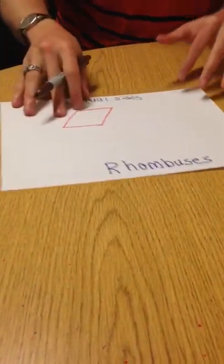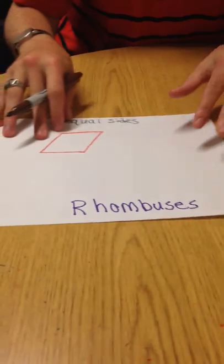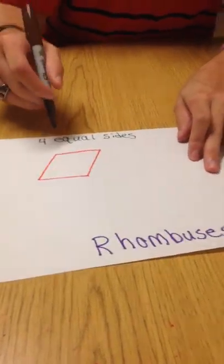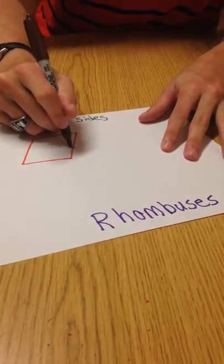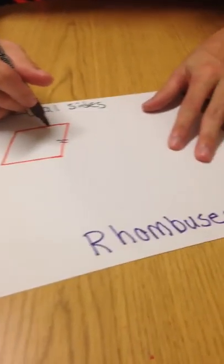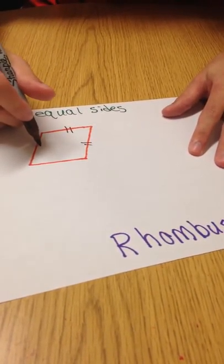The second to last quadrilateral that I am going to show you today is the rhombus. The rhombus has four equal sides, like the square.